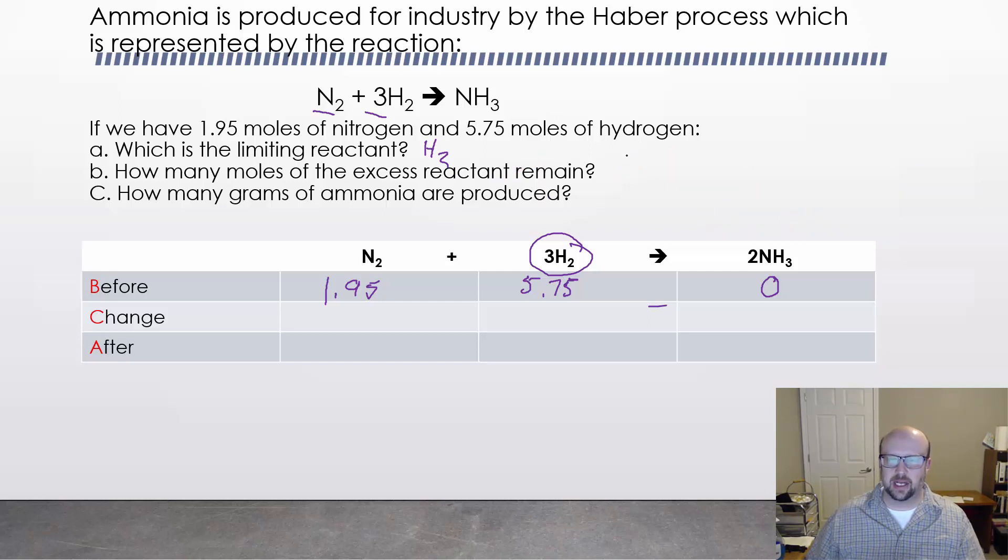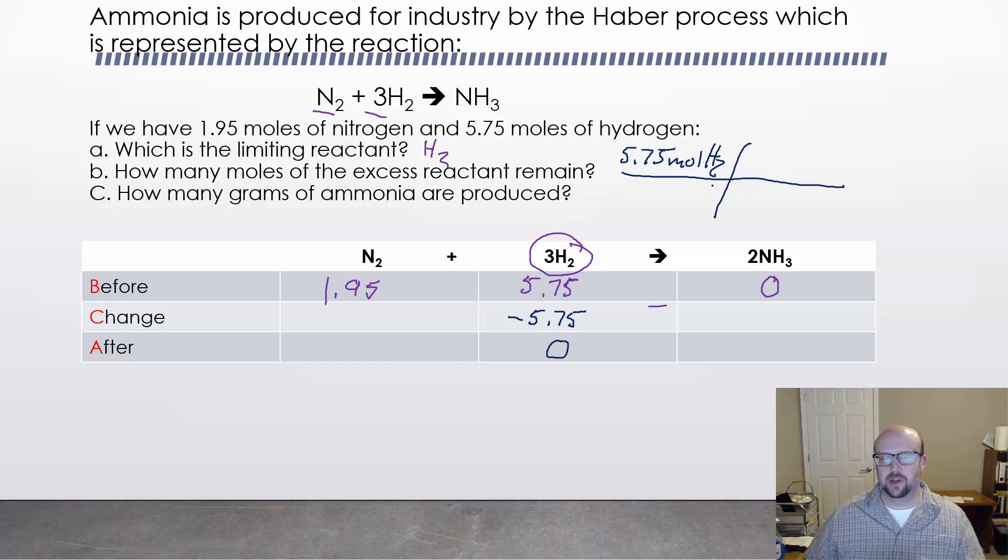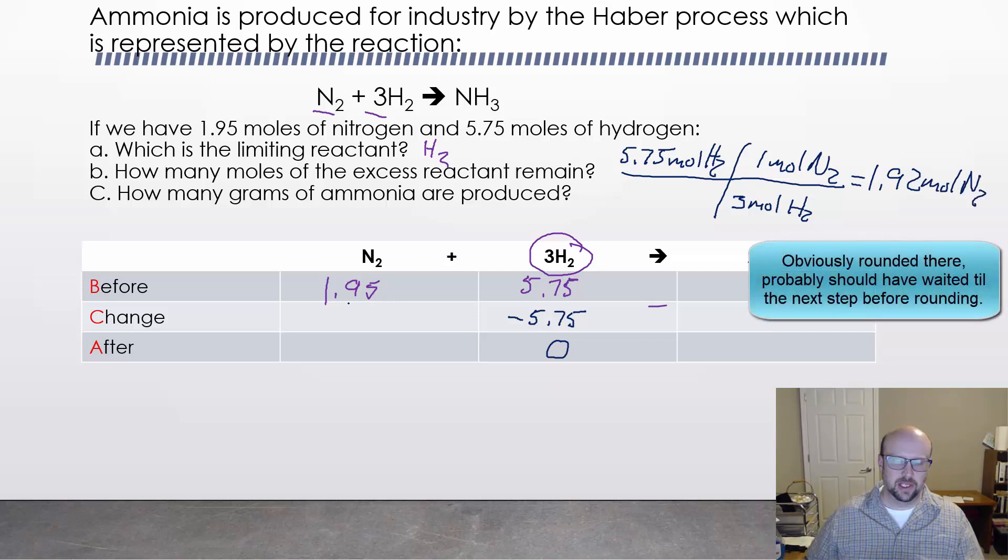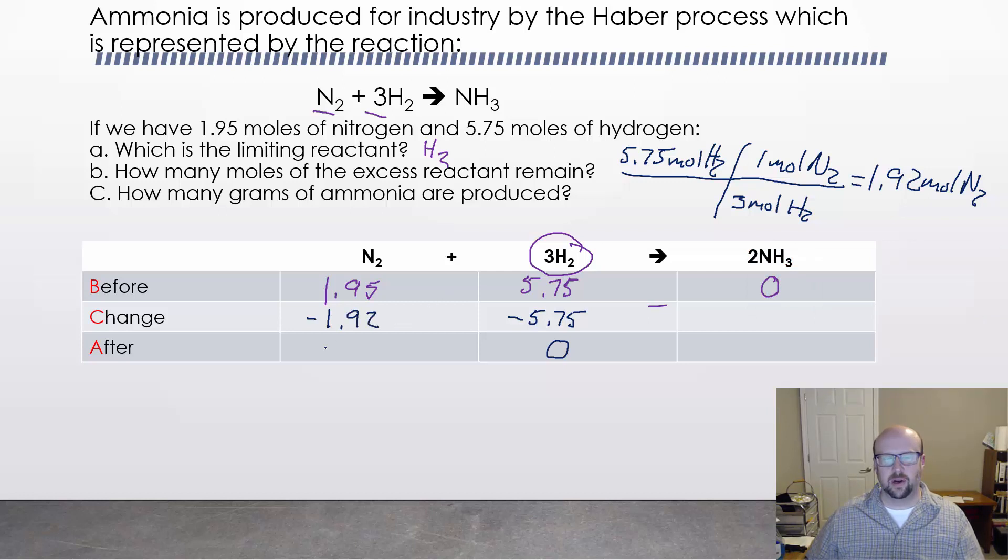So 5.75 moles of hydrogen. Remember the whole point of a limiting reactant is that you're going to completely consume it. It's the thing that you run out of. So that means I already know that I'm going to lose all 5.75 moles of hydrogen, which means I'm going to be left with 0 moles of hydrogen. So the question is then how much nitrogen do I lose? Do I lose 5.75? Obviously not because they're in a 3 to 1 ratio and so I've got to do that little bit of math, the inverse of what we just did to figure out how much nitrogen we're going to use. If we do this math, we're going to get 1.92 roughly, moles of nitrogen. So that means we're losing almost all of the nitrogen but not quite. That means at the end we're going to be left with 0.03 moles of nitrogen at the end.